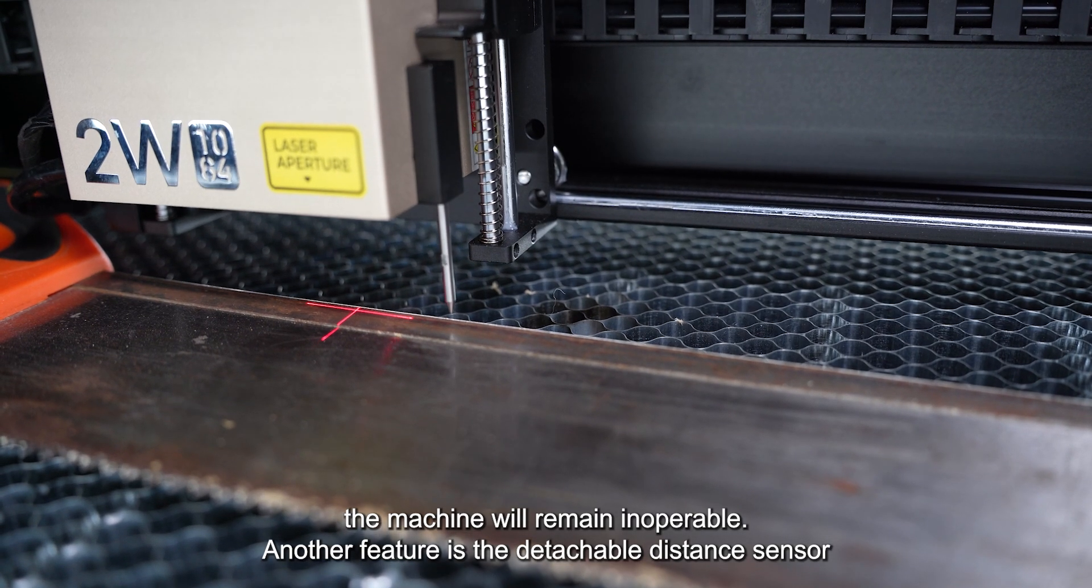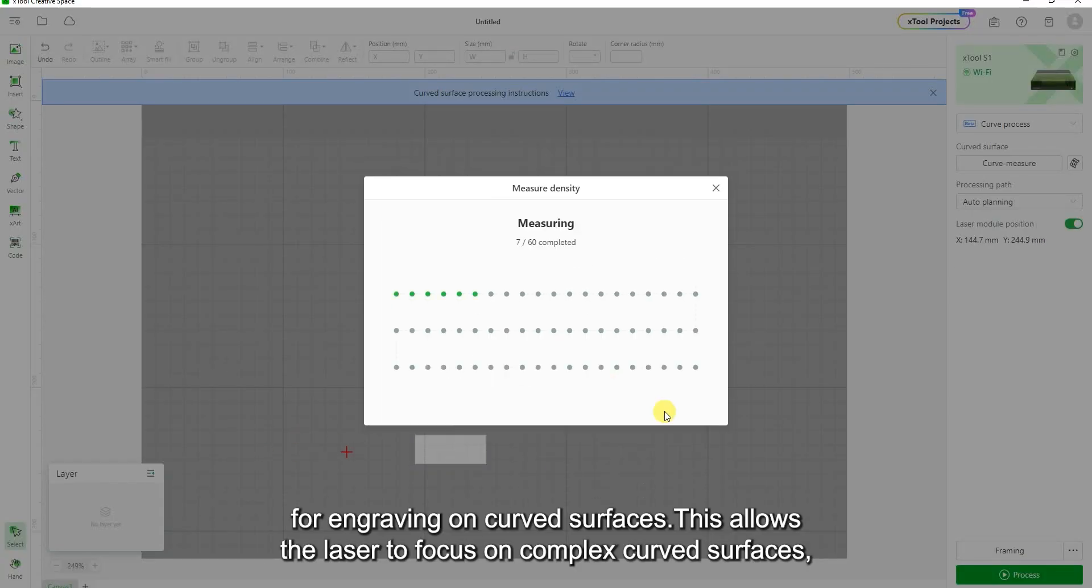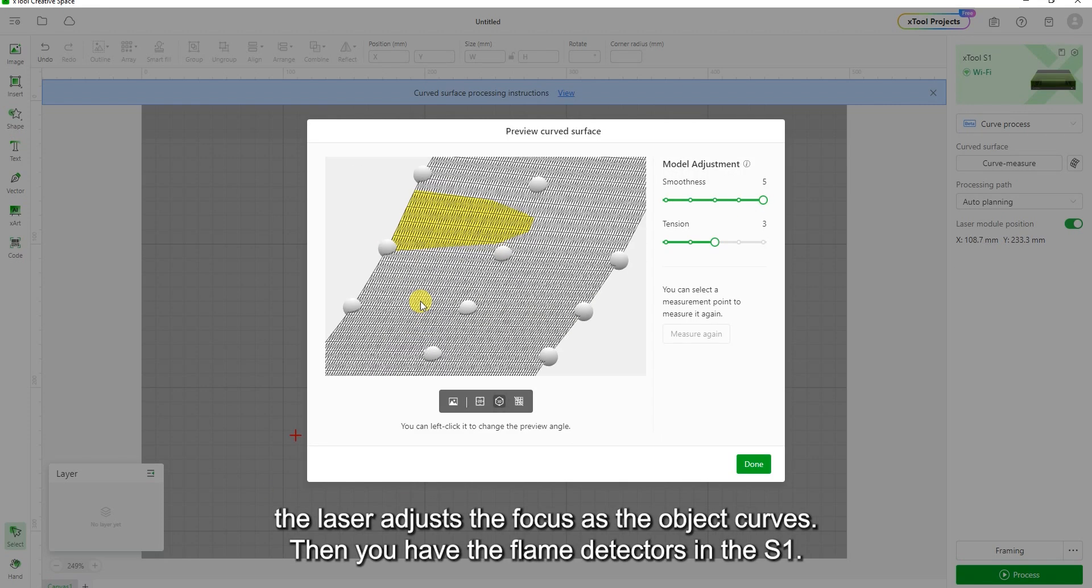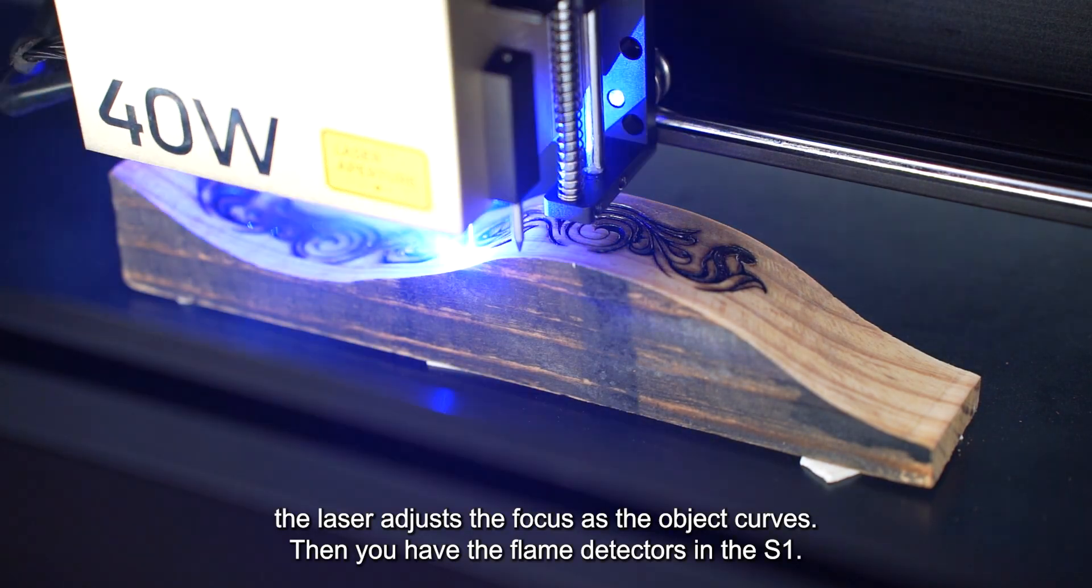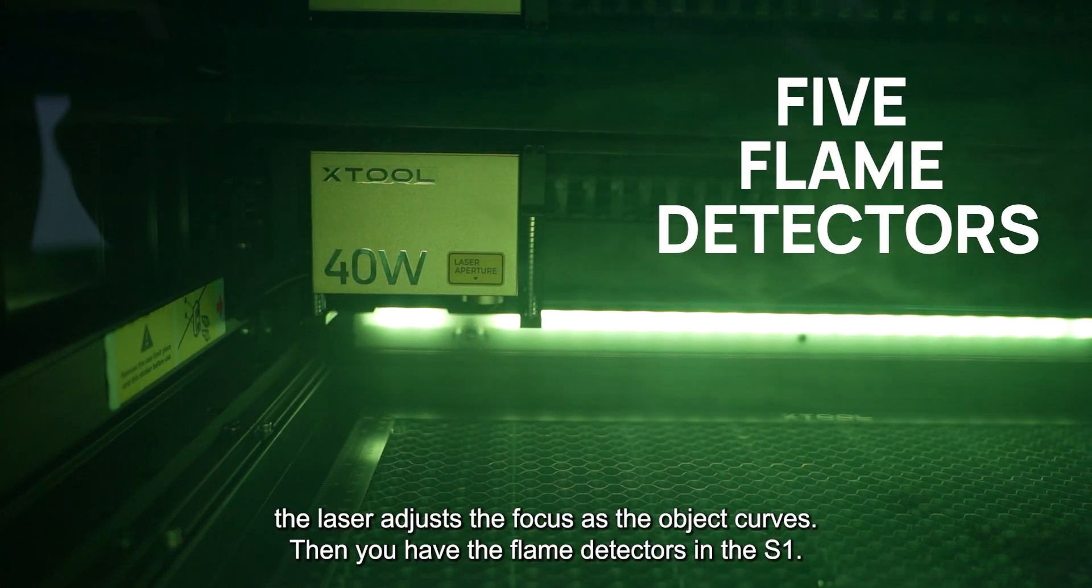Another feature is the detachable distance sensor for engraving on curved surfaces. This allows the laser to focus on complex curved surfaces. The laser adjusts the focus as the object curves.